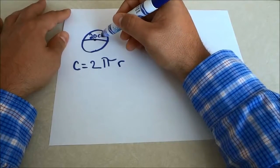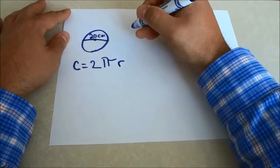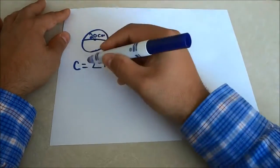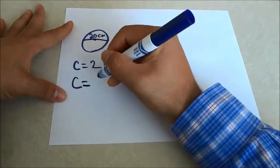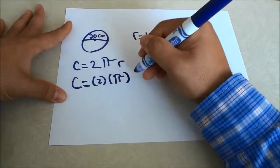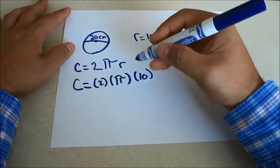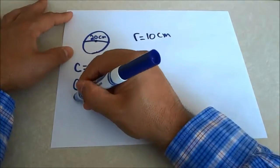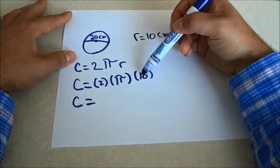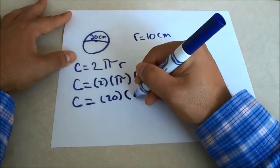So the radius is half of 20 centimeters, which is 10 centimeters. I'm going to write r equals 10 centimeters over here. So the circumference equals 2 times π times 10 centimeters, but I'm just going to write 10 for now and bring down the unit at the end. I'm going to shorten this by multiplying 2 and 10 together, which gives me 20. So the circumference equals 20 times π.